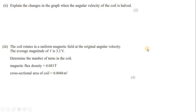Explaining the change in the graph when angular velocity is halved: EMF is proportional to rate of change of flux. If angular velocity is half, the rate of change of flux is half, so EMF is half. With half the angular velocity, it takes double the time to complete the cycle - so the period doubles.